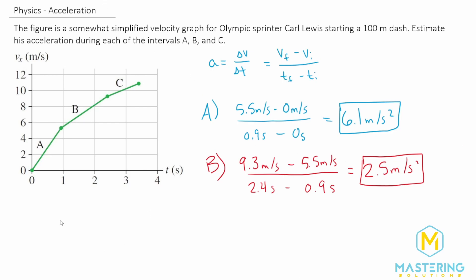And lastly, let's do C. So C, we have the final velocity is 10.9 meters per second minus 9.3, and then this one is three and a half seconds minus 2.5 seconds.